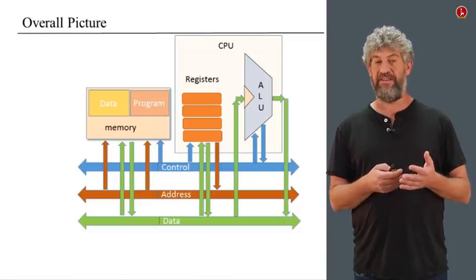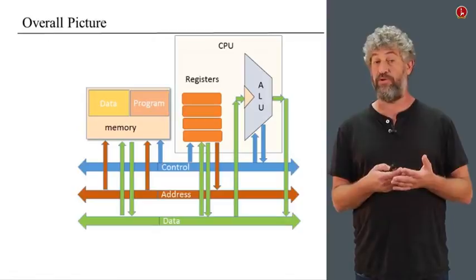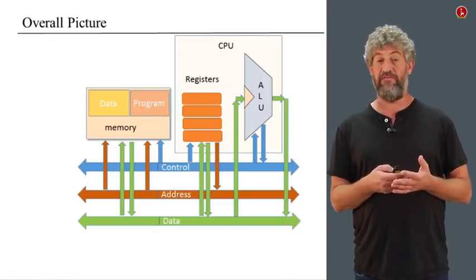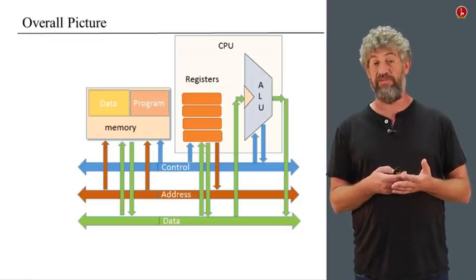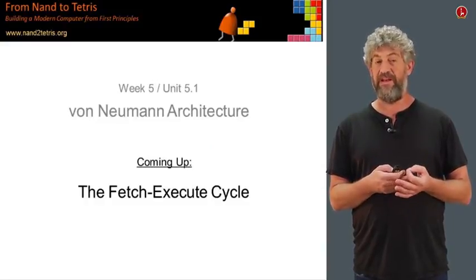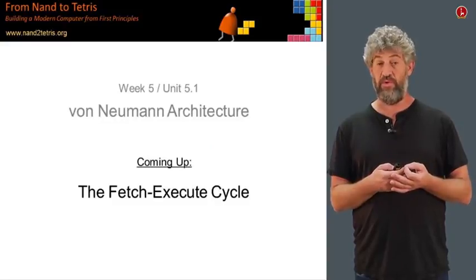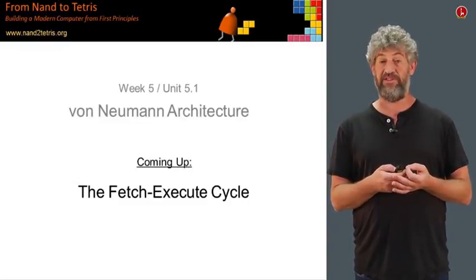So far we've talked about all the different components that a computer is going to be composed of, and how they're connected to each other in terms of which information moves from where to where. What we're going to do in the next unit is look more closely at the innermost loop — the basic thing that our hardware is supposed to do: take an instruction from the program memory and actually execute it using the rest of the system as appropriate. That is called the fetch-execute cycle and will be the content of the next unit.